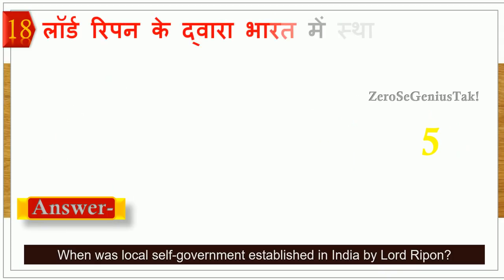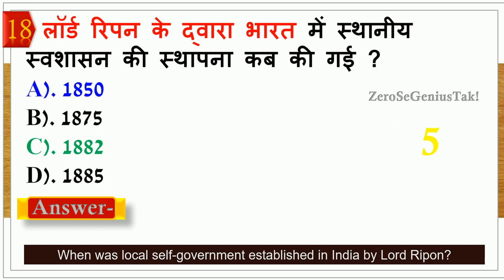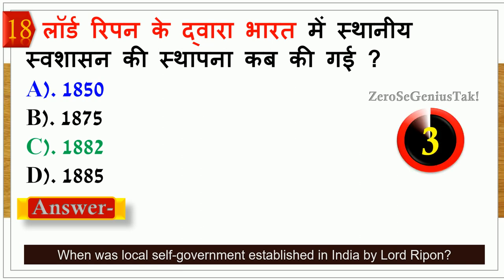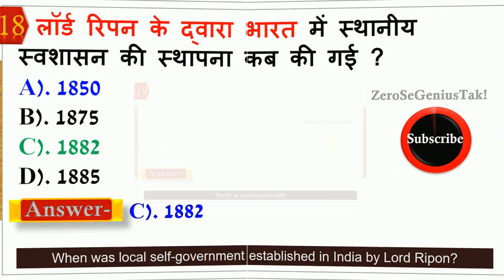अगला question — Lord Ripon के द्वारा भारत में स्थानीय स्वशासन की स्थापना कब की गई? सही जवाब है — 1882 में स्थापना की गई।